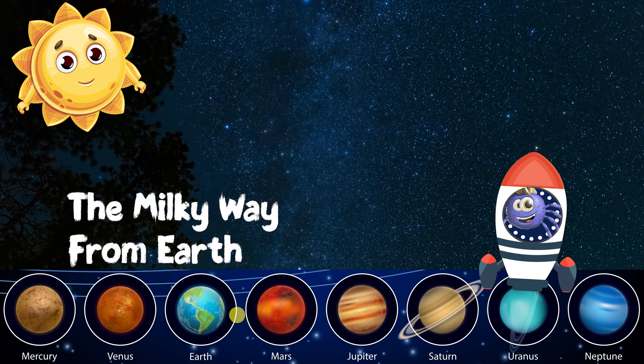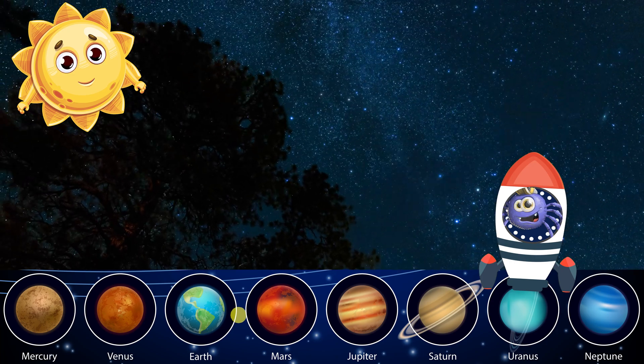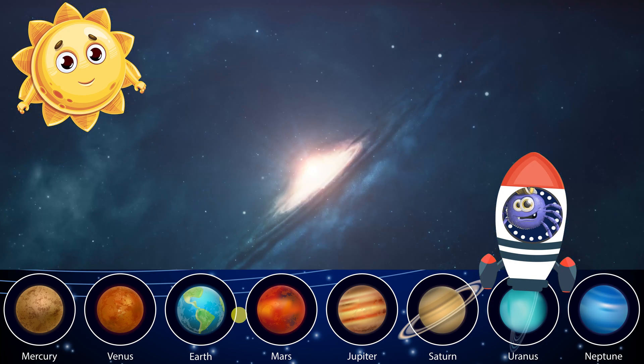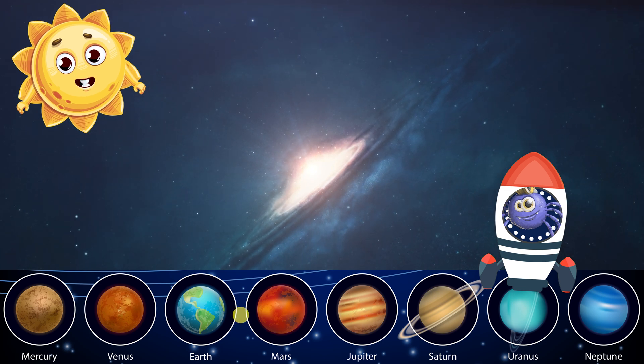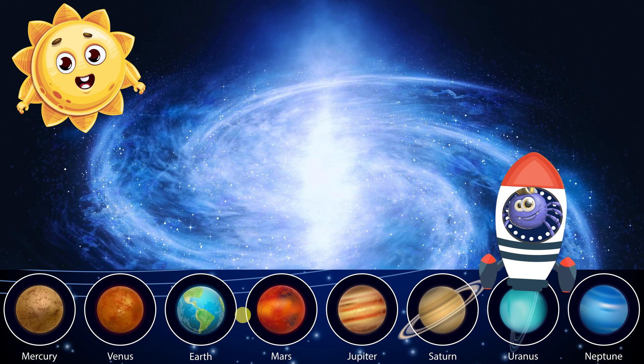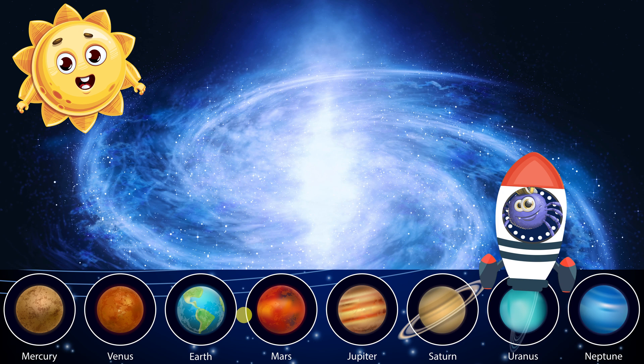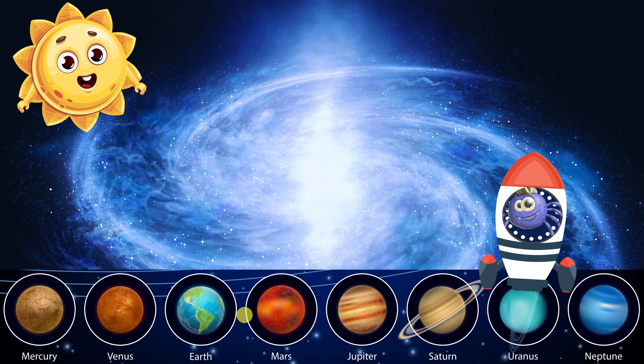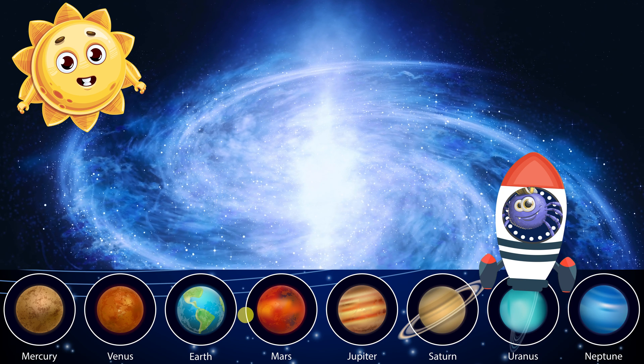So, I know of Milky Way candy bars, but I've heard that our galaxy is also the Milky Way. What is a galaxy and can you tell me more about the Milky Way? The Milky Way is the galaxy that our solar system belongs to. A galaxy is a huge collection of stars, gas, dust, and dark matter that are held together by gravity. There are billions of galaxies in the universe, and they come in different shapes and sizes. The Milky Way is a barred spiral galaxy with a central bulge and four main arms that extend from it.